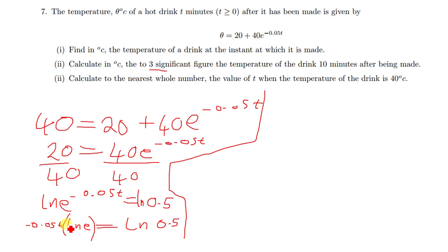This part is nothing but equal to 1. Hence to find the value of t, you're just going to divide. It would be ln(0.5) divided by negative 0.05. So the value of t will be nothing but equal to ln(0.5) over negative 0.05.